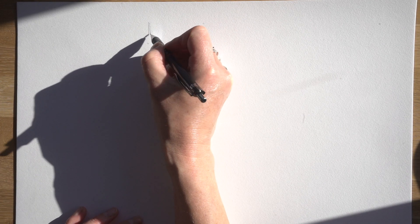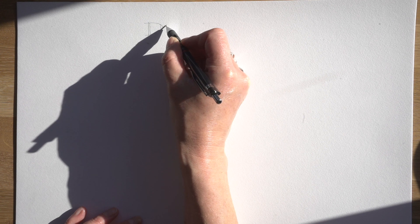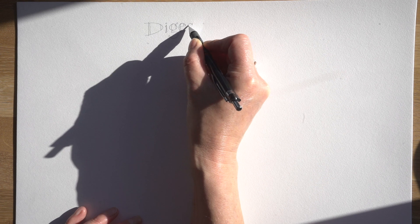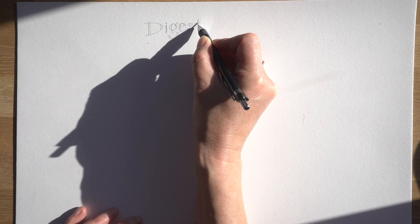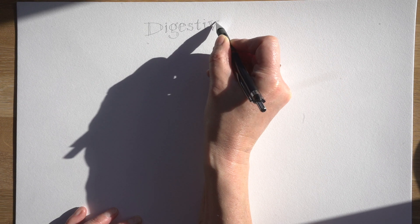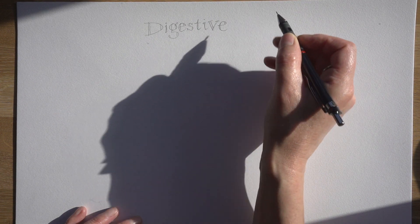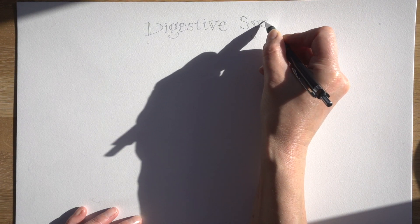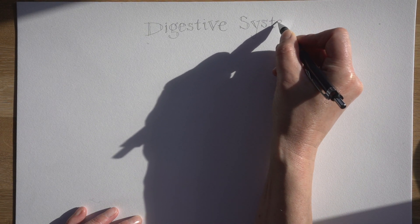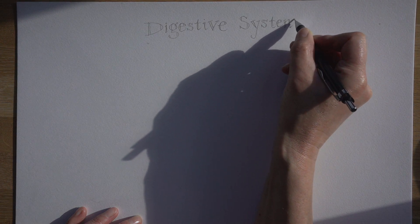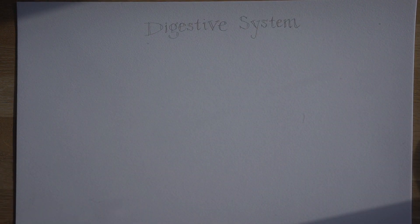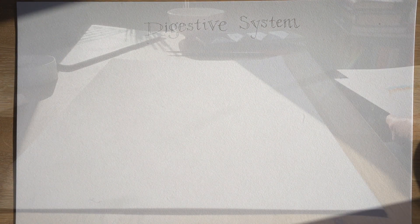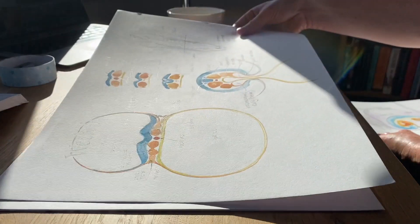Welcome to number seven in my series of Lockdown Embryology videos. I'm Alice Roberts. In the first few videos, I looked at the very early development of the embryo in utero, starting with fertilization and then the formation of the germ disc and the folding that takes place in week four to convert that disc into a series of nested cylinders, with the central cylinder made of endoderm. And it's that central cylinder that we're going to be focusing on now as we move on to explore the development of the digestive system.